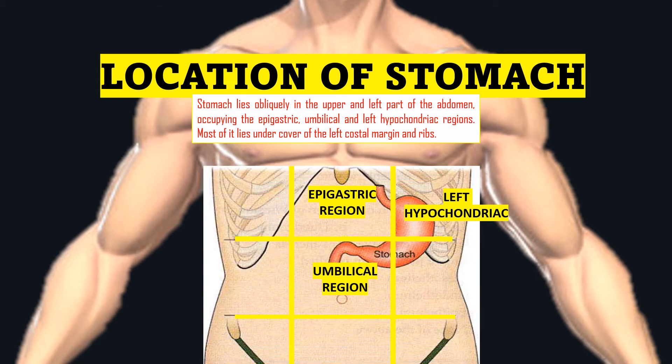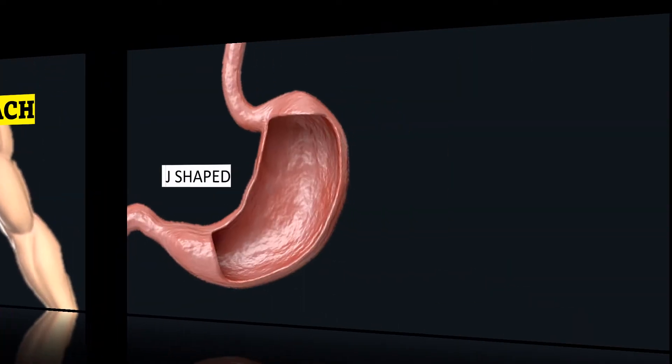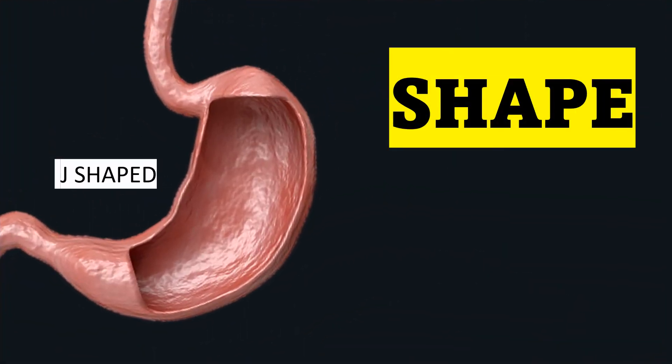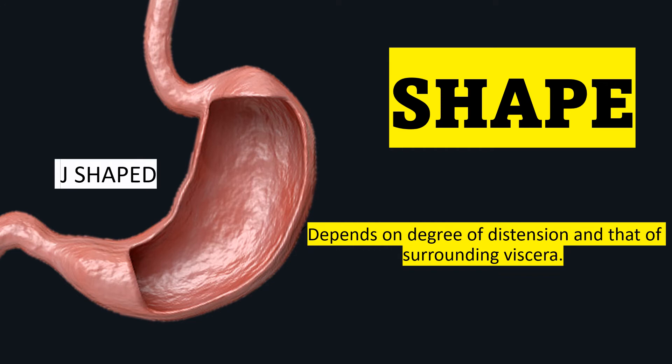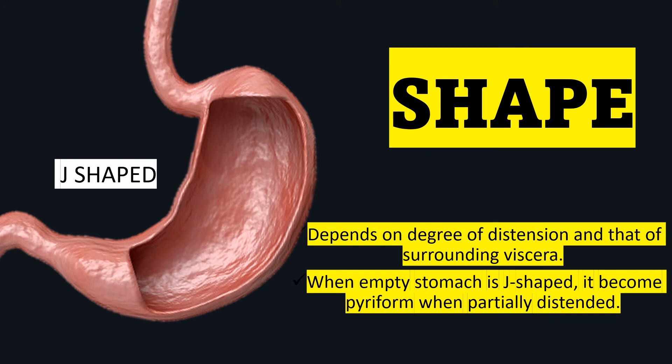So the stomach lies in three quadrants: epigastric, umbilical, and left hypochondriac. Next is the shape of the stomach. Shape depends on the degree of distension and that of the surrounding viscera such as the colon. When empty, the stomach is J-shaped.